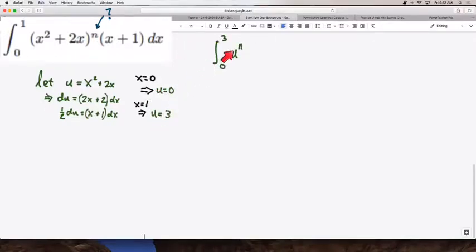and I can change my variable from x to u, so instead of x squared plus 2x to the n, it's just u to the n, and then all of this stuff becomes 1 half du. I'll put the 1 half out here, and the du here.